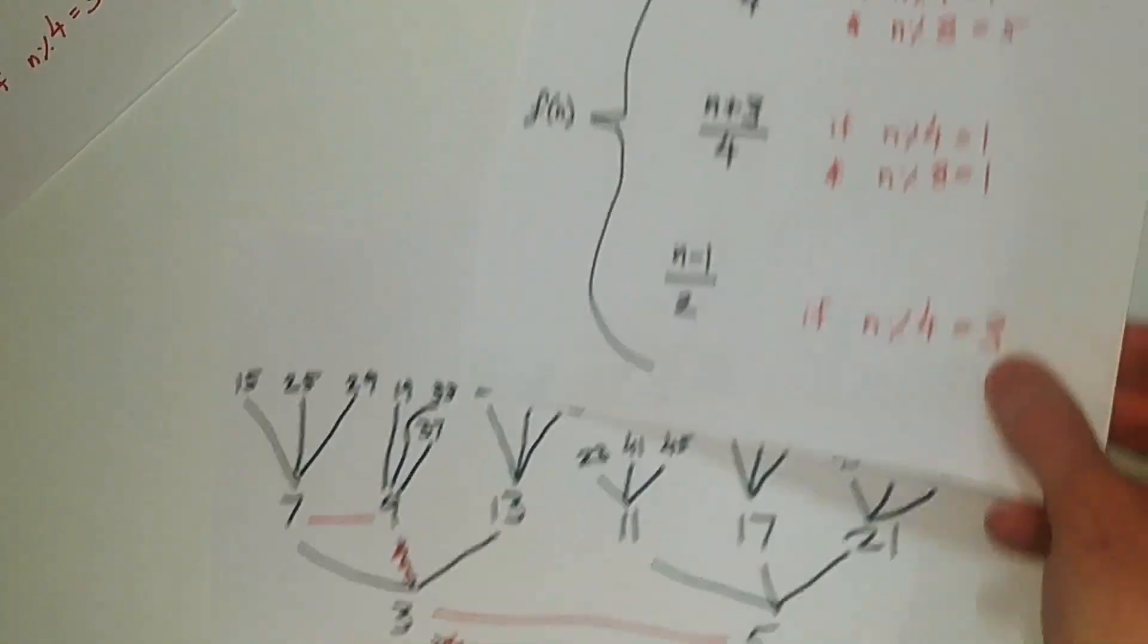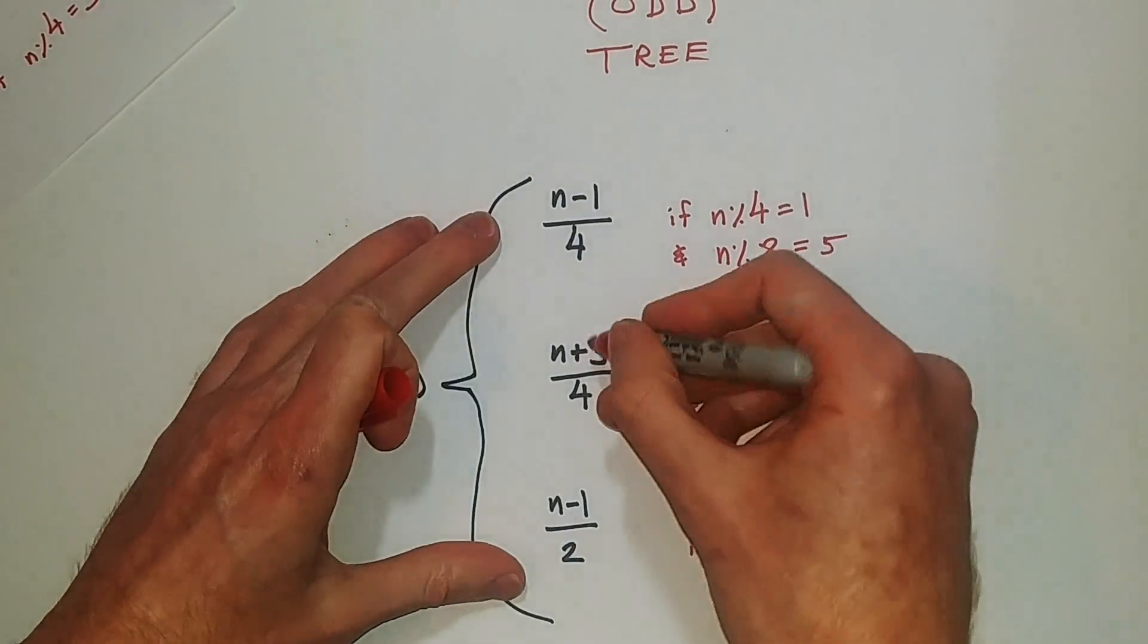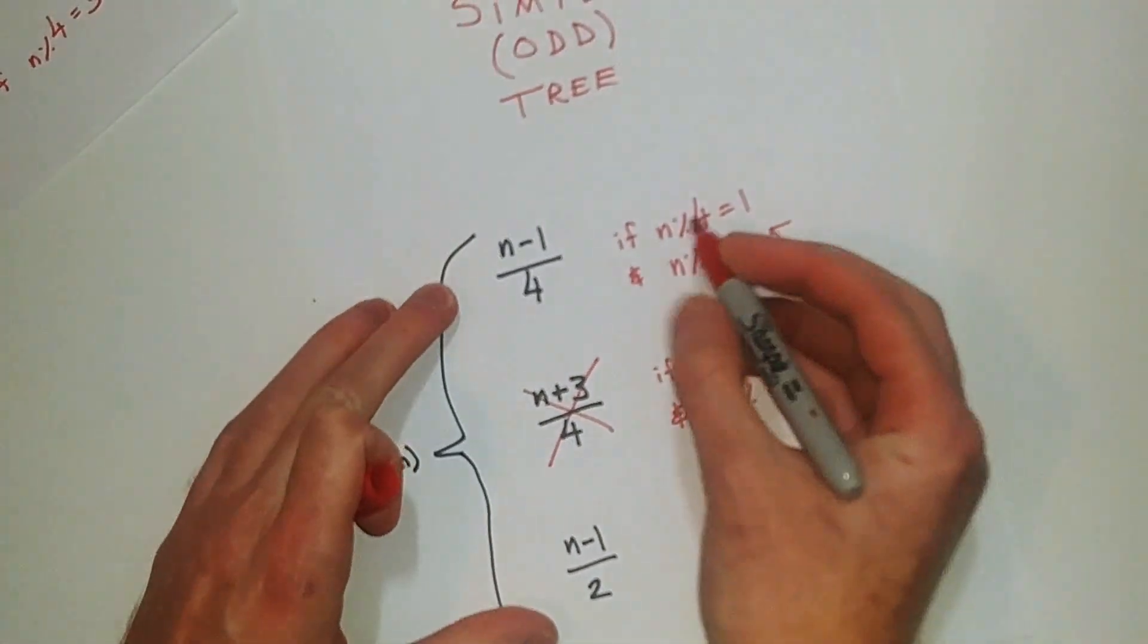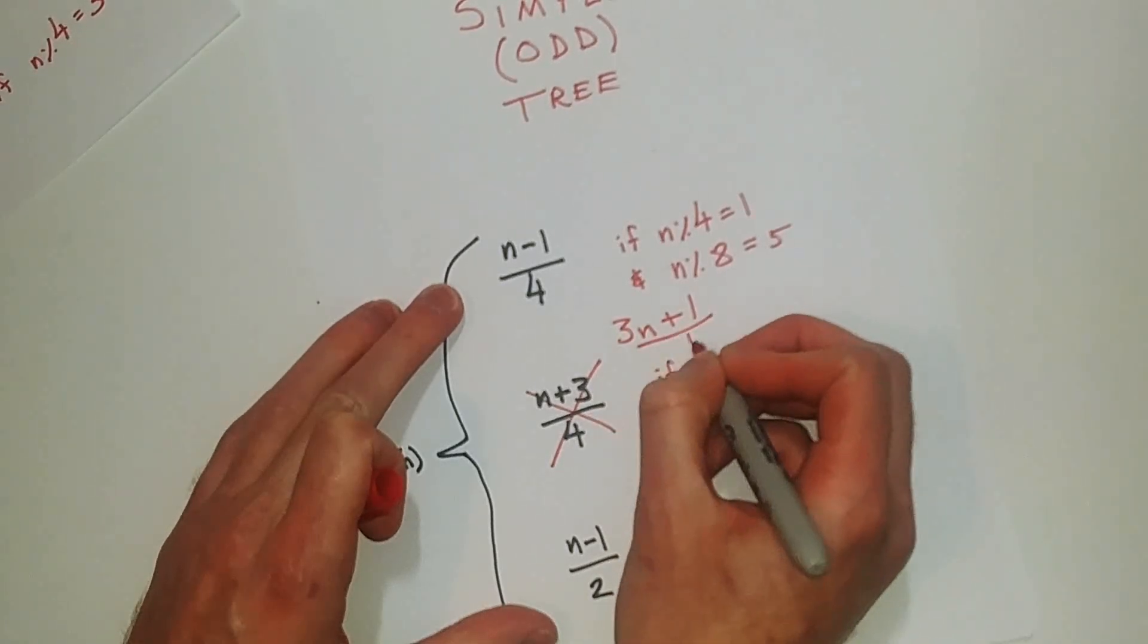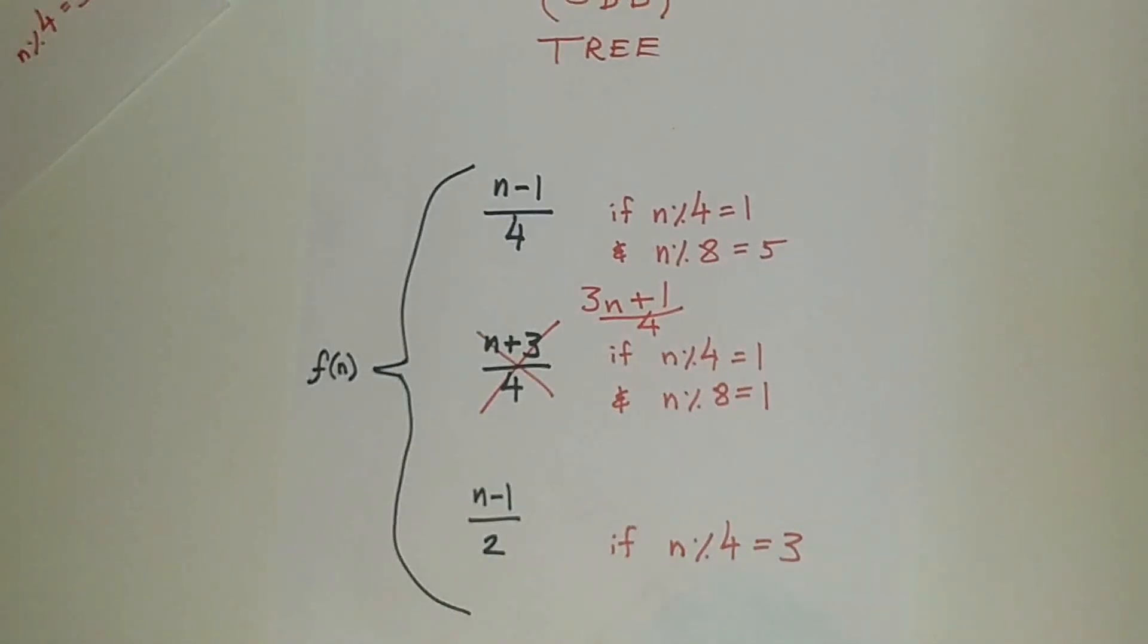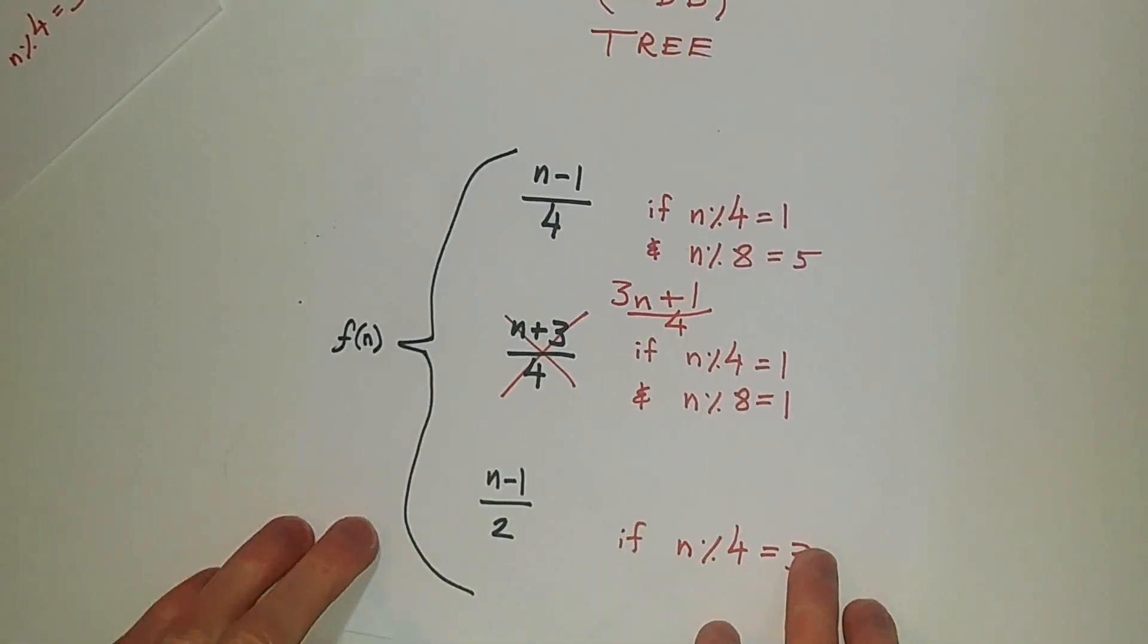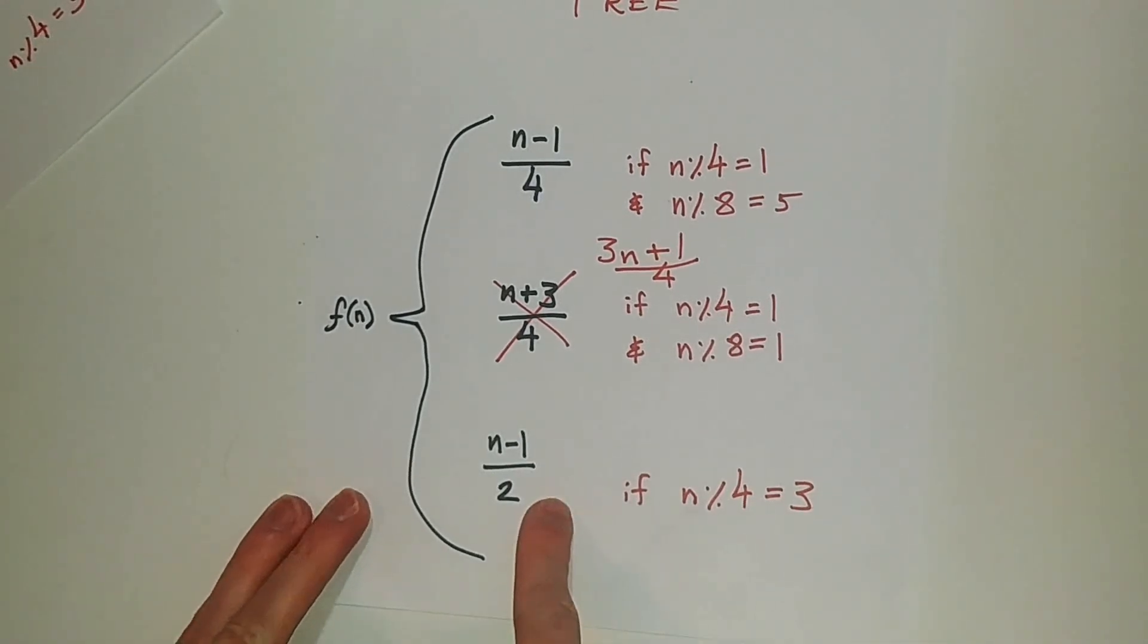So simple tree, we can easily change that to 3n plus 1 divided by 4, if these conditions are the same. And we know that all of these will eventually lead to 1. The trickier part is this last one, we have to get that to be 3n plus 1 divided by 2.